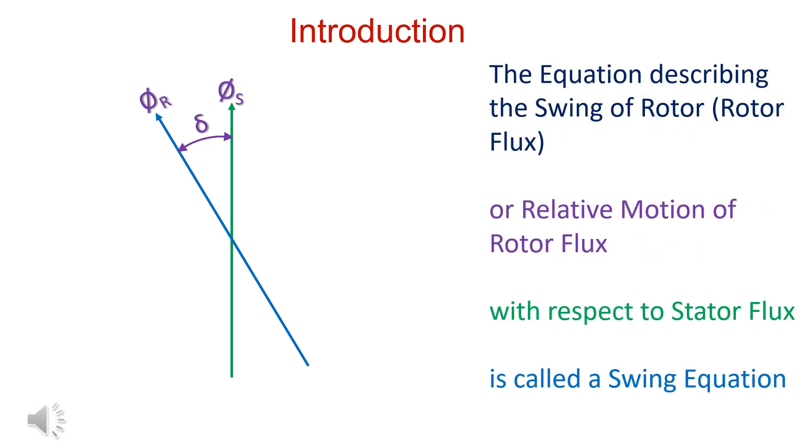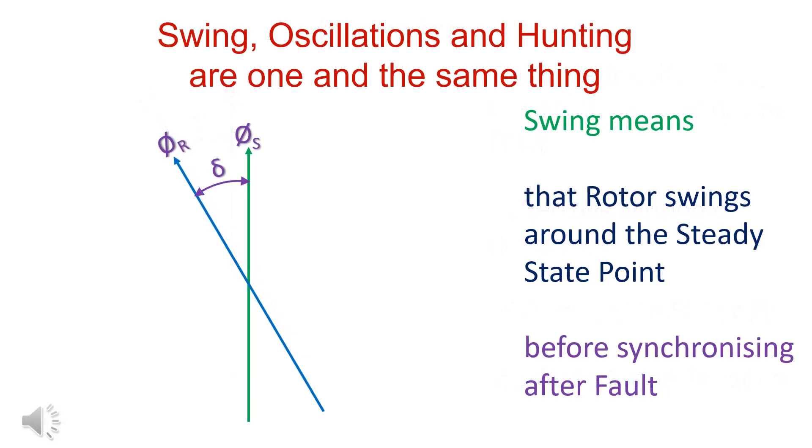The equation describing a swing of rotor is called swing equation. Swing means that rotor swings around a steady state point before settling at it.